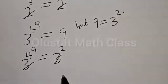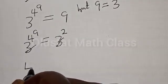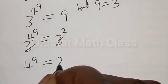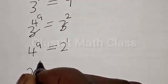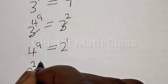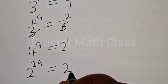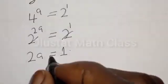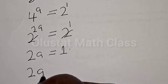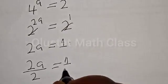They have the same base, so that cancels. We are left with 4 raised to power a is equal to 2, which is the same as 2 raised to power 1. We have 2 raised to power 2a is equal to 2 raised to power 1. The bases cancel, giving us 2a is equal to 1. Dividing both sides by 2, we get a is equal to 1 divided by 2.